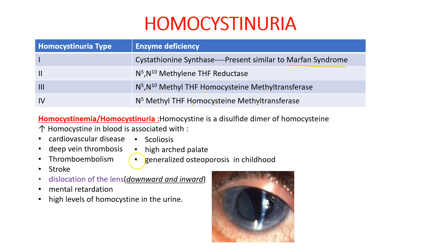There may be scoliosis, high arched palate, and generalized osteoporosis, which may make the doctor confused as to whether this is Marfan syndrome. But in homocystinuria there will be dislocation of the lens which is downward and inward. Lens dislocation also occurs in Marfan syndrome but in that case it will be outward and upward. The patient may have mental retardation and there will be elevated levels of homocysteine in the urine.